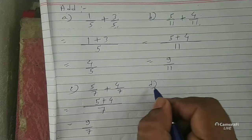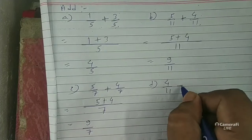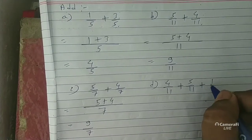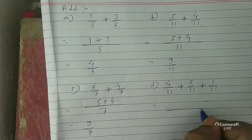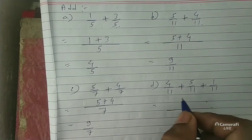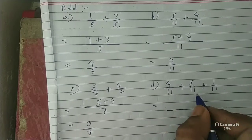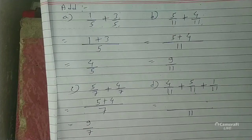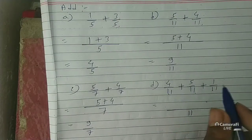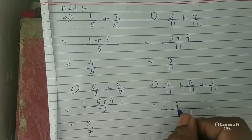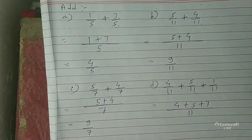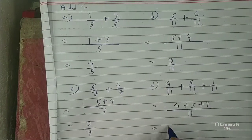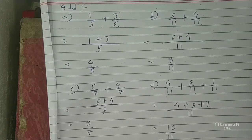Next: 4 by 11 plus 5 by 11 plus 1 by 11. First, see the three fractions — the denominator is the same: 11, 11, 11. So the common denominator is 11. The numerators are different: 4, 5, 1. So write 4 plus 5 plus 1: 4 plus 5 is 9, and 9 plus 1 is equal to 10. So the numerator is 10.